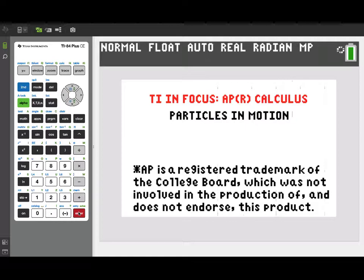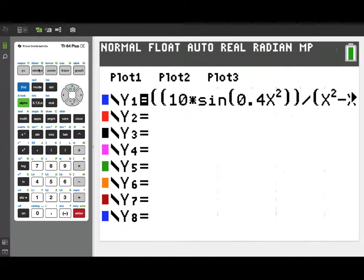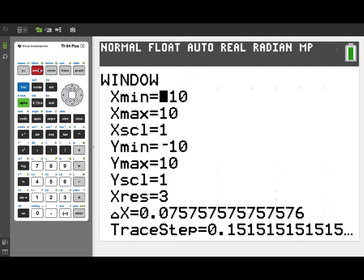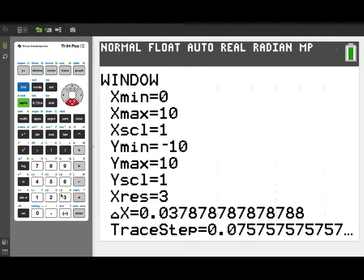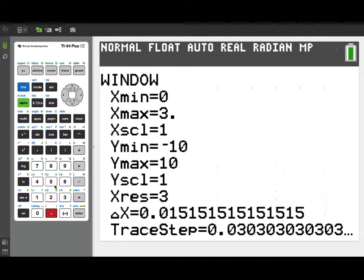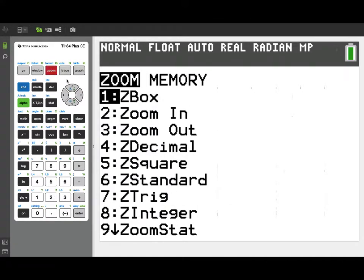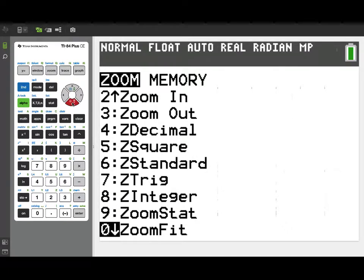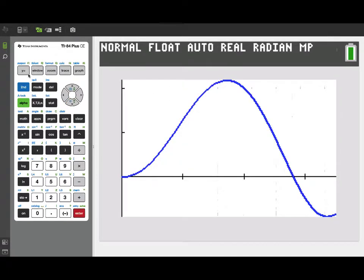We're going to start out by going to the y equals menu, where I've entered the given velocity function from the problem, involved sine. Now, we're going to want to look at a graph of this velocity function first. So, I'm going to the window, and I'm going to set the time values from 0 to 3.5 as given in the problem. After I've entered those, I'm going to go to the zoom menu and choose zoom fit, so it'll fit a nice window to incorporate this graph. There it is. We've got a nice graph of our velocity function.